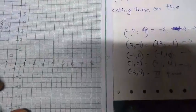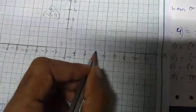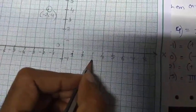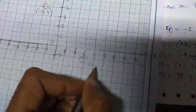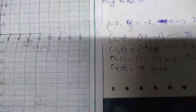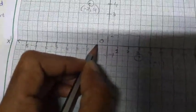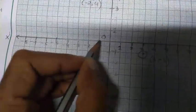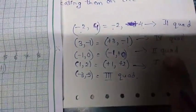For (3, −1): plot 3 on the x-axis and go 1 step below. This point lies in the 4th quadrant — verified. For (−1, 0): since the y-coordinate is 0 it lies on the negative x-axis. We got it in the 2nd quadrant — verified.